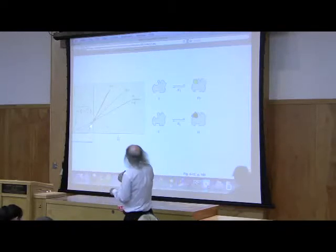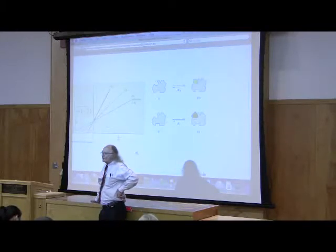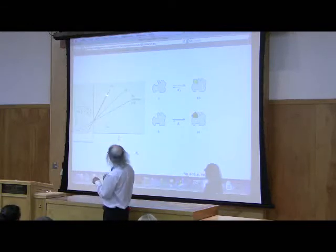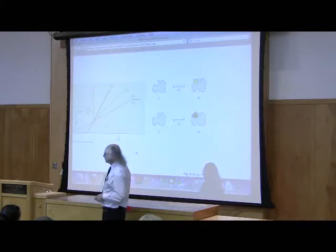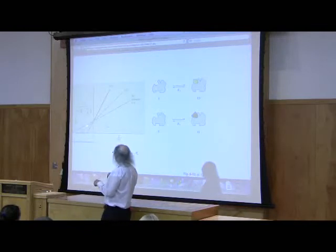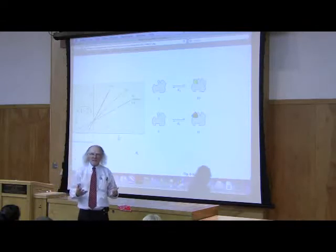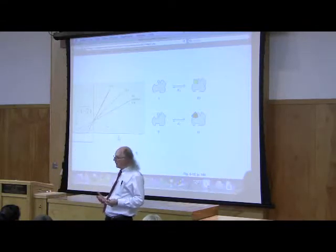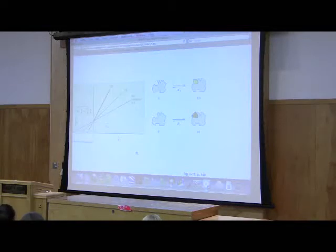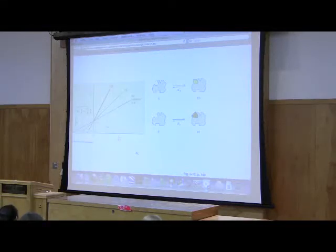Remember, we had the Lineweaver-Burk plot, and I told you that the Y-intercept was 1 over Vmax. So if I had an uninhibited reaction, here shown in blue, and I compared it to an inhibited reaction, I would expect that the two Vmaxes would be the same, and that means they're going to cross at the same point on the Y-axis, because 1 over Vmax is going to be the same as well. Right? I remember also that the X-intercept was minus 1 over KM. If KM increases, then minus 1 over KM must get closer to 0.